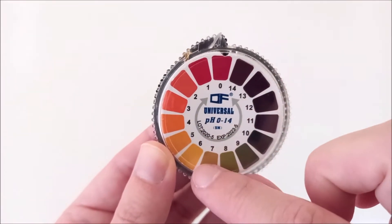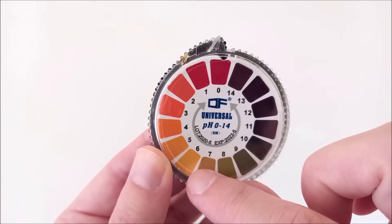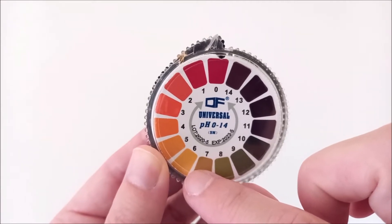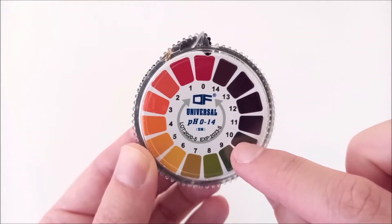pH 7 is considered neutral. The ideal pH of soap should range between 8 and 10 so that it can gently cleanse the skin.